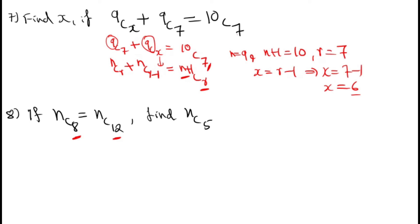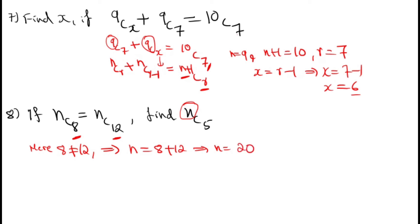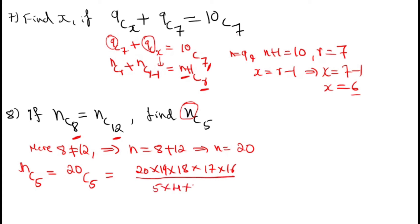Eighth problem: If NC8 = NC12, find NC5. First find N: since 8 ≠ 12, N = 8 + 12 = 20. Then NC5 = 20C5 = (20×19×18×17×16) / (5×4×3×2×1) = 15504.